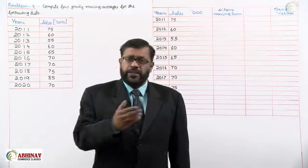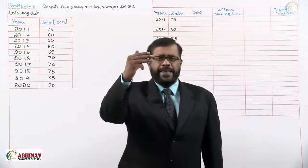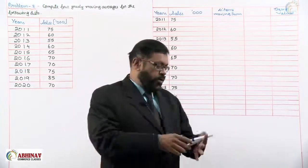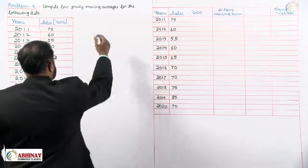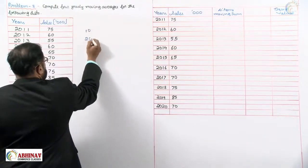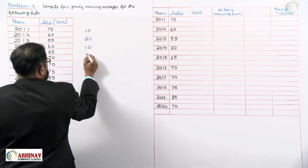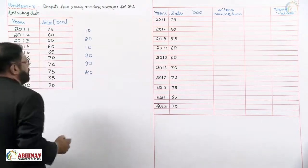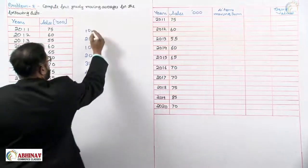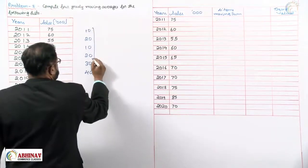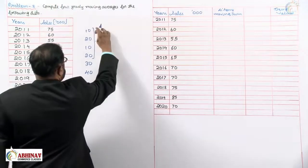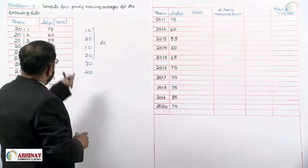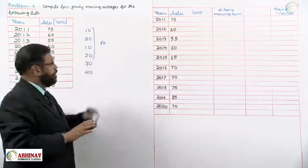As we have learned, when we find the moving items — whether three items or five items — we write the total in the middle. The same concept is applied for four-yearly also. For example, for the first four years we add and write in the middle, but the middle is not exactly at the second year or the third year; it falls in between.